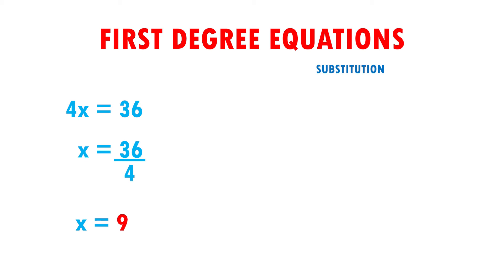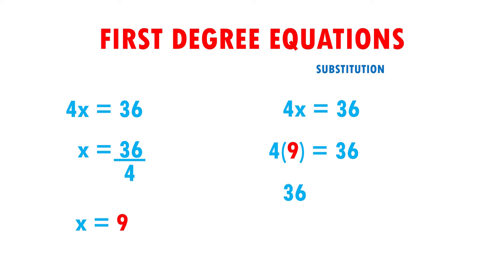To see if my result is correct, I have to substitute and put the same equation: 4x equals 36. Instead of putting the x, I put its value. And 4 times 9, which is the value of x, is equal to 36. When performing 4 times 9, it gives me 36, and that is equal to 36. Therefore, my result is correct because both sides of the equation are the same. Very easy, right?